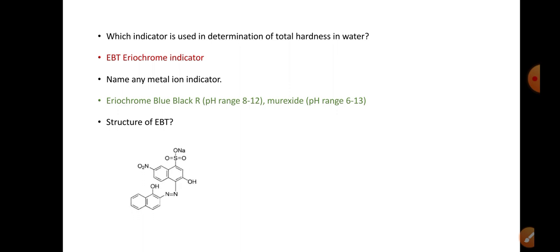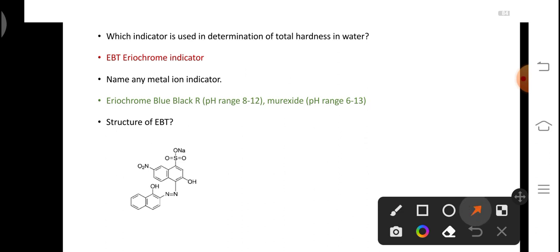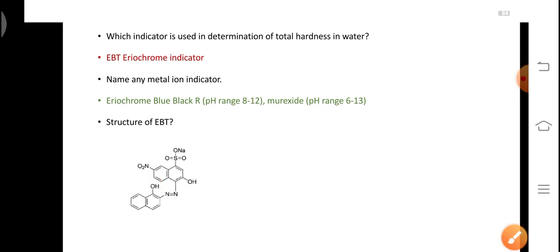Examiners may ask you about the structure of EBT. This is the structure of EBT. The important point about it is that EBT has two phenolic hydrogens. These phenolic hydrogens easily release the protons when it is mixed with water and form complex with the cation. The complex formed by EBT is unstable and it is wine red in color.